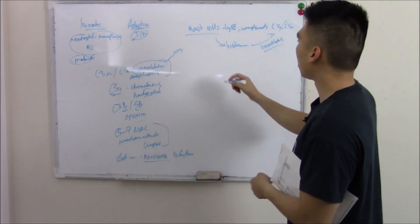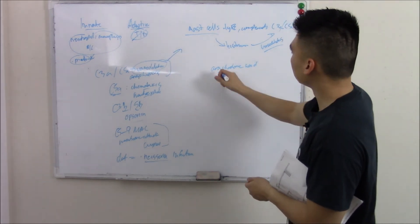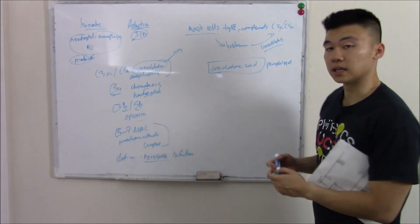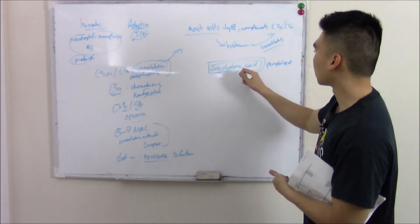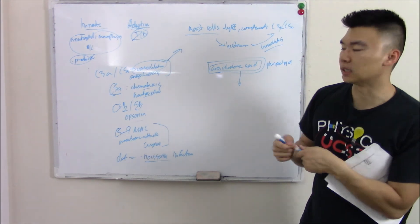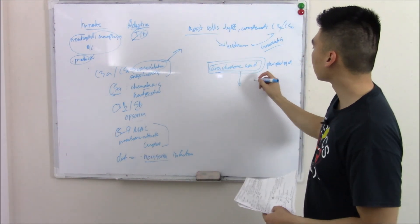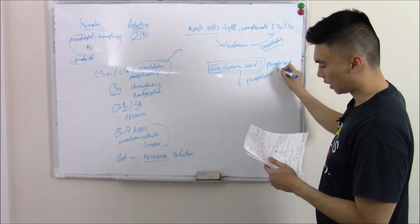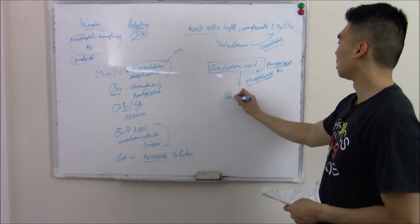Mast cells also release arachidonic acid. Arachidonic acid sits in the phospholipid of all cells and stays there until inflammation occurs — think of it as an 'in case of inflammation, break glass' mechanism. When mast cells are activated, when complements are activated, phospholipase A2 breaks down the phospholipid and releases arachidonic acid.